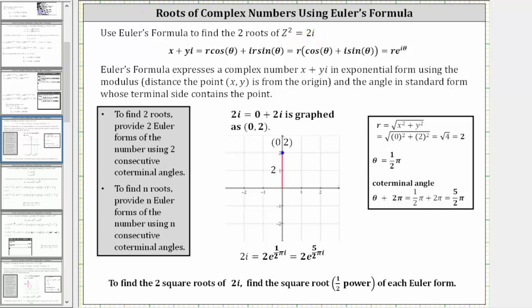Euler's formula expresses a complex number in the form x plus yi in exponential form, which is r times e raised to the power of i theta, where r is the modulus or distance the point (x, y) is from the origin. This is the same r in polar form, and theta is the angle in standard position whose terminal side contains the point (x, y).